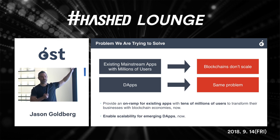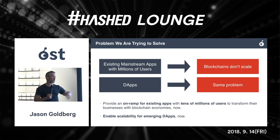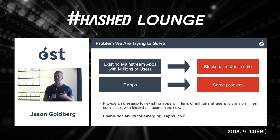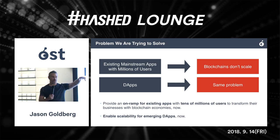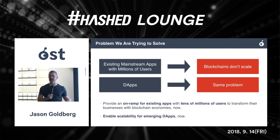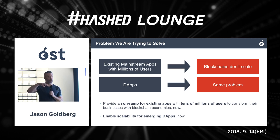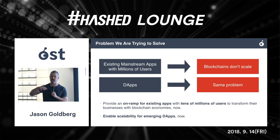The problem we're trying to solve on scalability: mainstream apps want to get part of their business on a blockchain. Among OST's contractual partners over the last year, they amount to over 300 million end users who want to bring their transactions on-chain and create new economies, but they can't today because blockchains don't scale. The dApps of the future face the same problem. We're focused on providing an on-ramp for existing apps and enabling scalability for emerging dApps — and doing so now, not waiting two or three years for the next phase of technology.